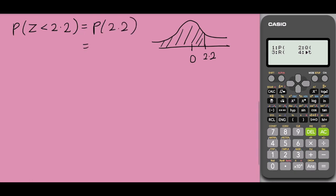And the answer would be, I select 1 for P, 2.2 equals to 0.9861.